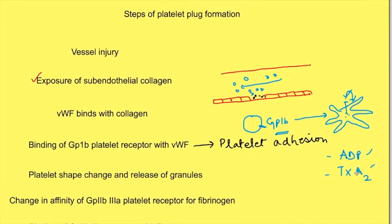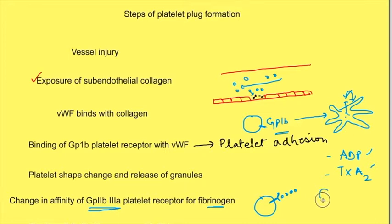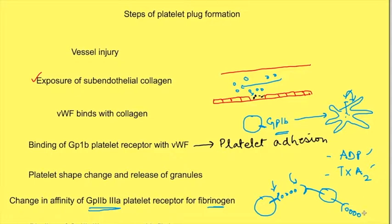Because of ADP and thromboxane A2 binding, there is a change in affinity of another protein present on the surface of the platelet, known as GP2B3A. Once its affinity increases, it binds to fibrinogen, and platelets start binding to fibrinogen. There is cross-linking between the platelets via fibrinogen, which is bound to the GP2B3A receptor of one platelet and also to another.